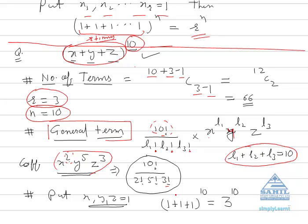Suppose you are asked for the sum of coefficients of all terms in the expansion. To find the sum of coefficients, put x, y, and z all equal to 1. That gives 1 plus 1 plus 1, three times, raised to power 10. Your answer will be 3 raised to power 10. In this manner, you can easily do all the questions of the multinomial theorem.